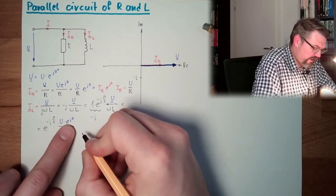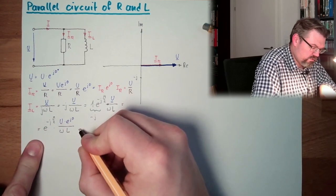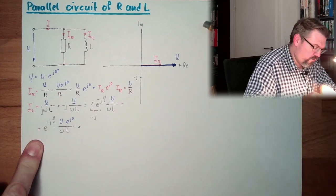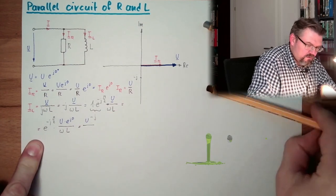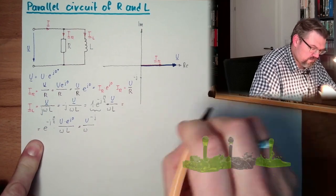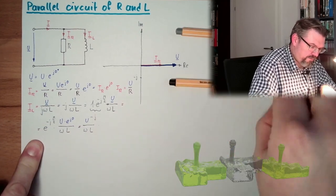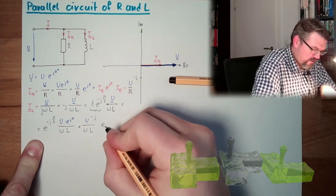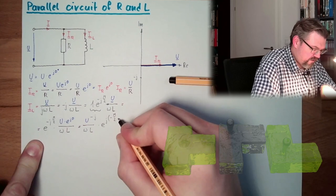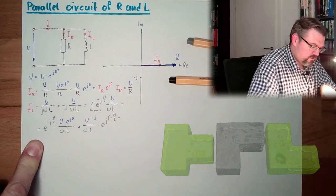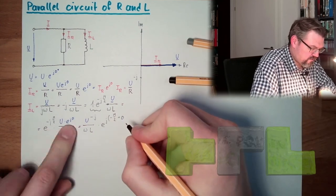We have here e to the minus j pi half multiplied, and now U e to the j zero divided by omega L.